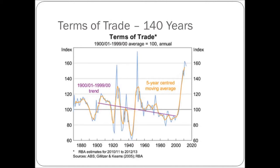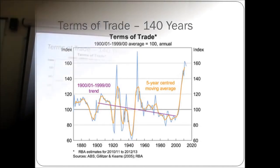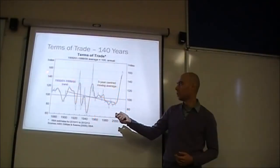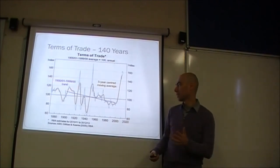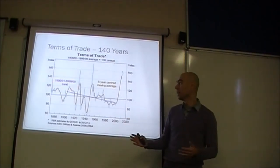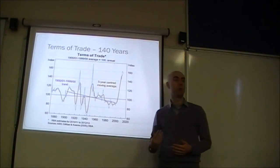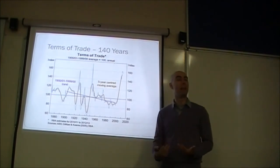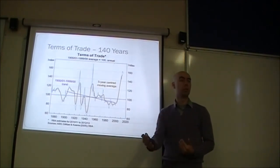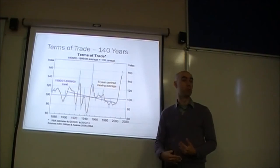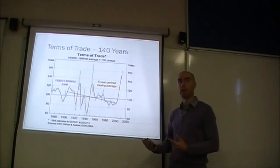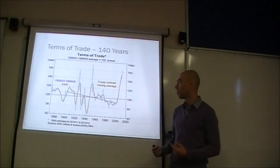From 1900 to 1999 — basically the last 100 years of the 20th century — it was a downward trend. The Terms of Trade were falling, which is bad for Australia. That means we need to export more goods in order to import the same amount of goods. That's the volume effect of lower prices.